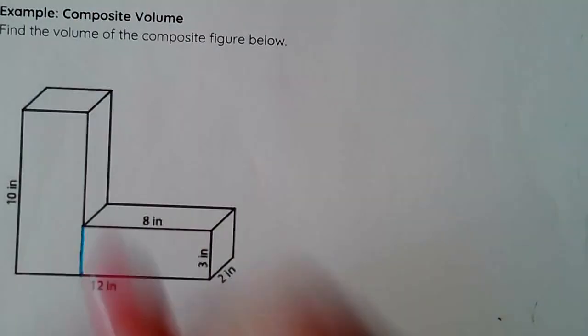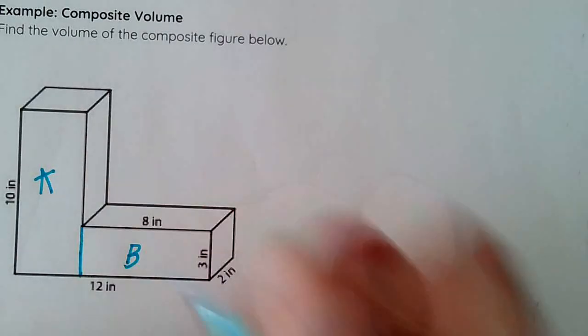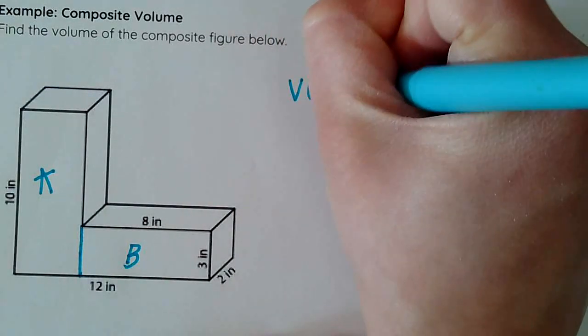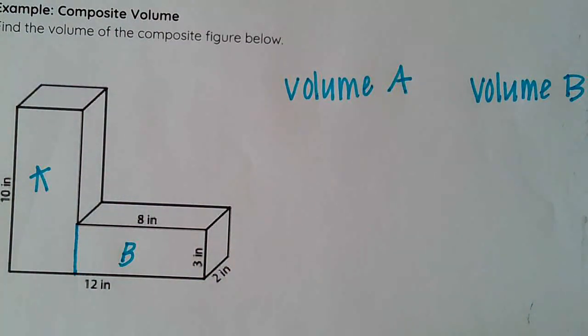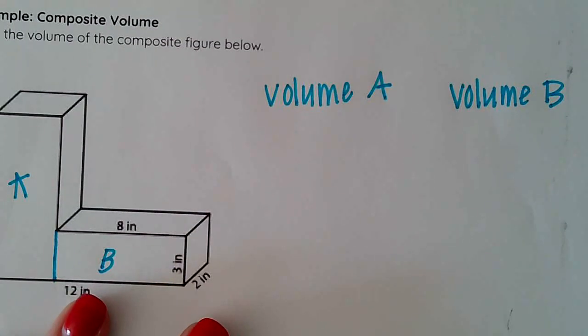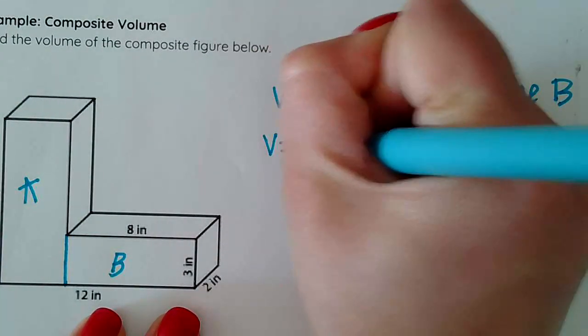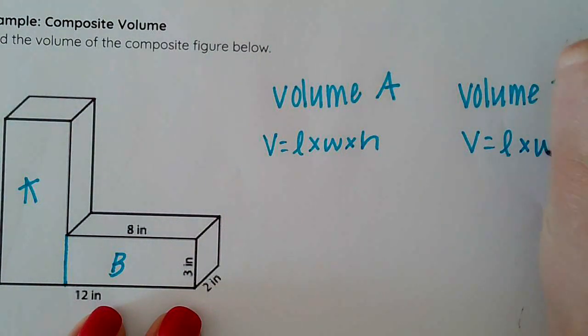So I've got volume A and I've got a figure B. So I need to find the volume for figure A, and then I'll have to find the volume of figure B. Now for both of those, I do use the same formula. Volume equals length times width times height. Volume equals length times width times height.